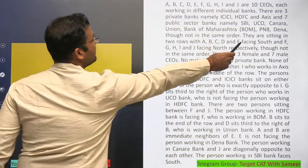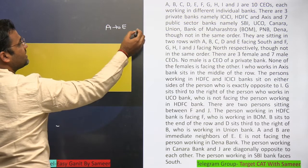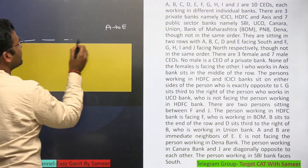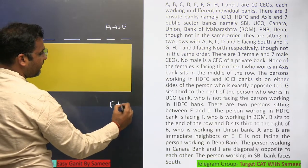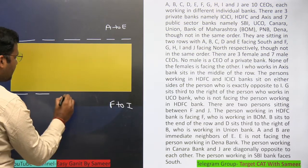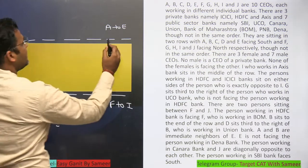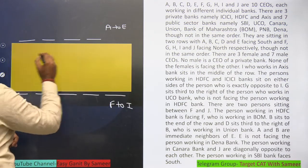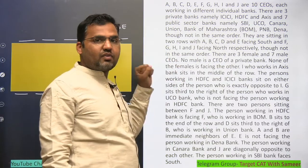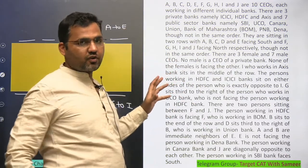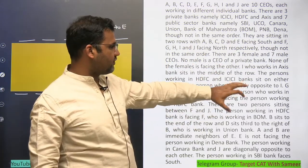A to E are the people facing south, sitting on one side of the table, and F to J are facing north on the other side. This is just basic information. Now, what are those points you need to start from? Never start putting random values from the statements.